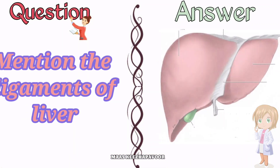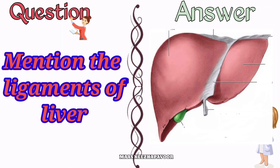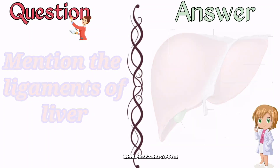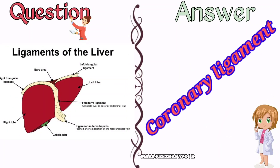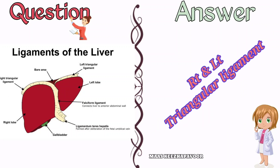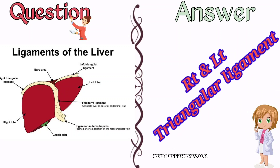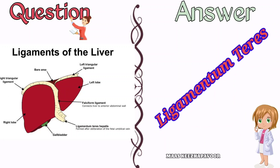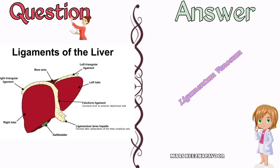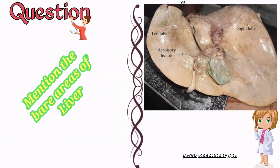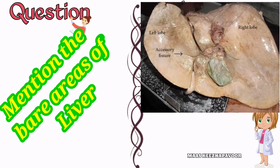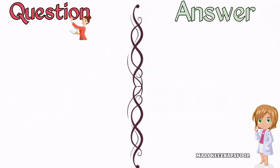Mention the ligaments related to the liver. The ligaments are the falciform ligament, coronary ligament, right and left triangular ligaments, ligamentum teres, and ligamentum venosum.